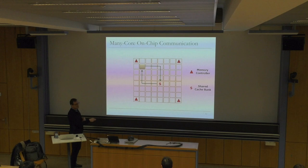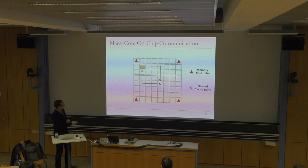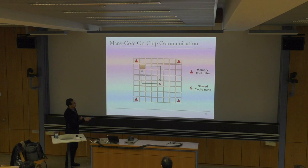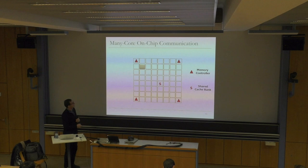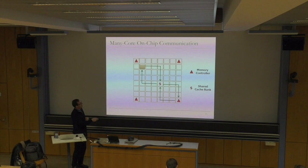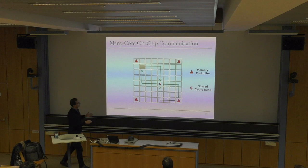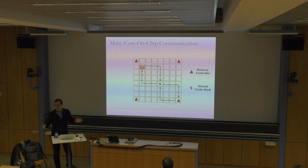If the data is present in the cache, it gets routed back to the requesting core. If there's a cache miss, the message is routed to the cache slice, which then sends a request to the memory controller. The memory controller accesses memory and returns data back to the cache, which then returns it to the core. Clearly, how much communication happens is affected by how your data is mapped.